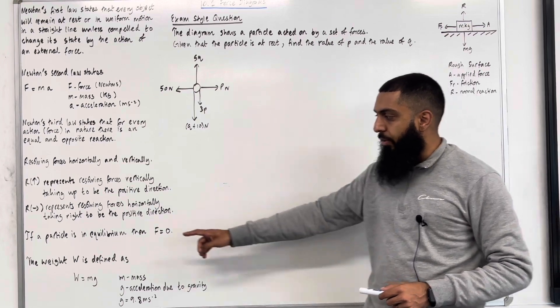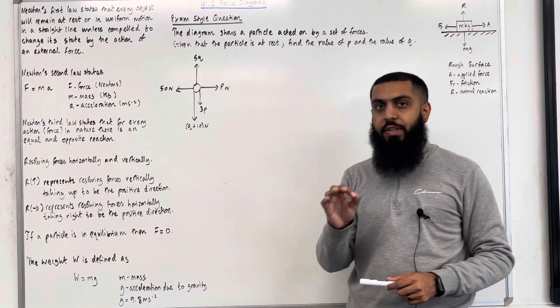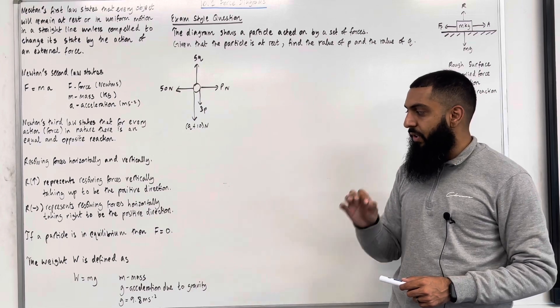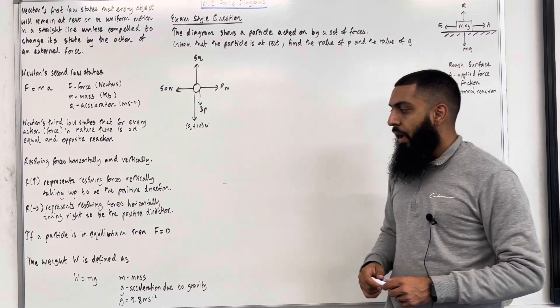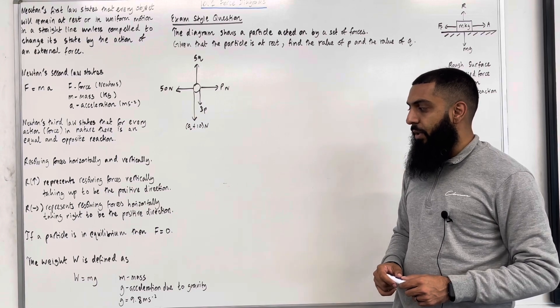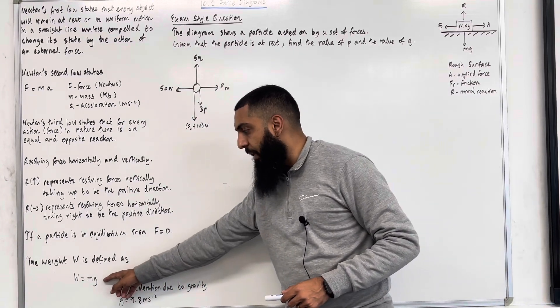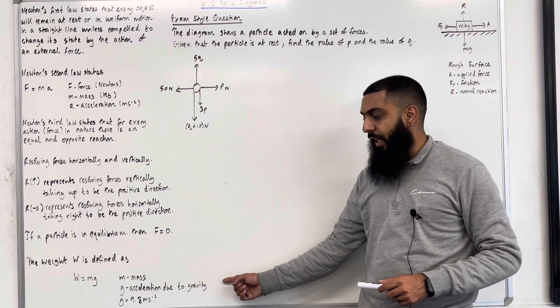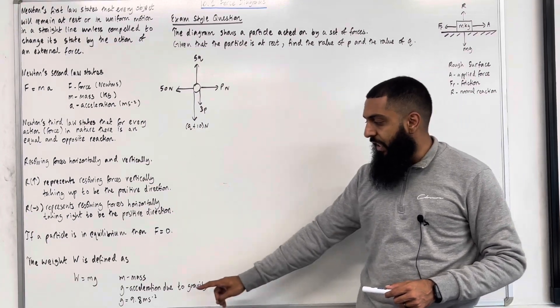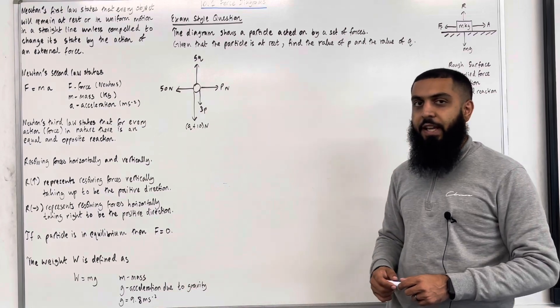If a particle is in equilibrium, this means that the particle is at rest. The resultant force F acting on the particle is therefore equal to zero. The weight W is defined as W equals M multiplied by G. M represents the mass, G represents the acceleration due to gravity, and G equals 9.8 meters per second per second.